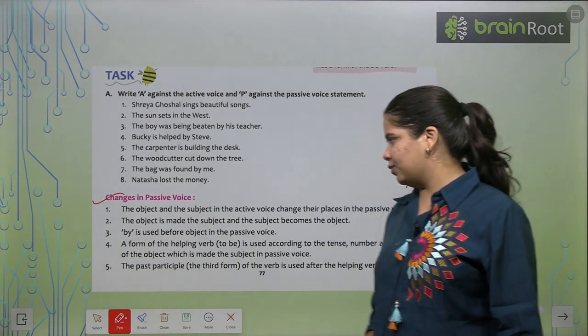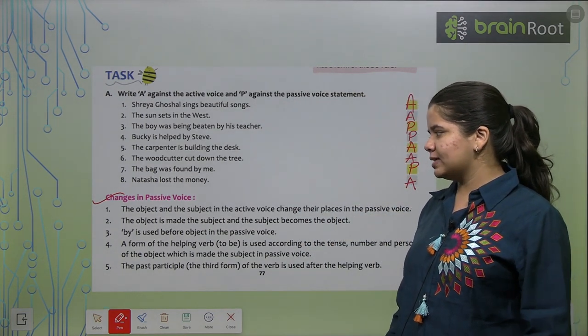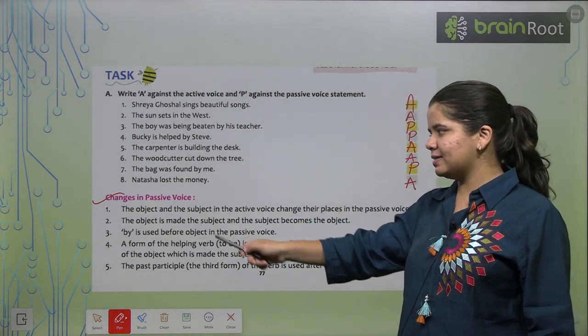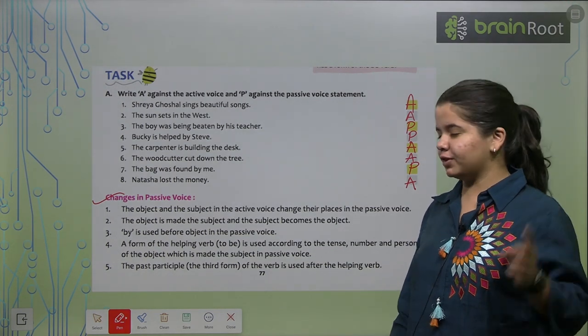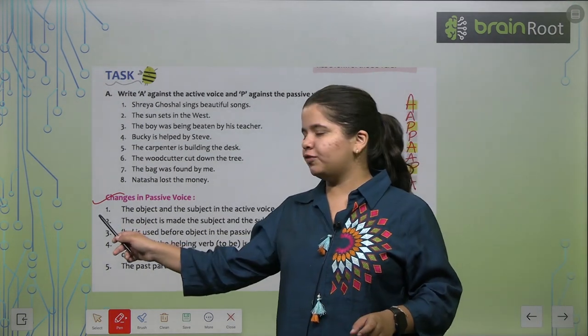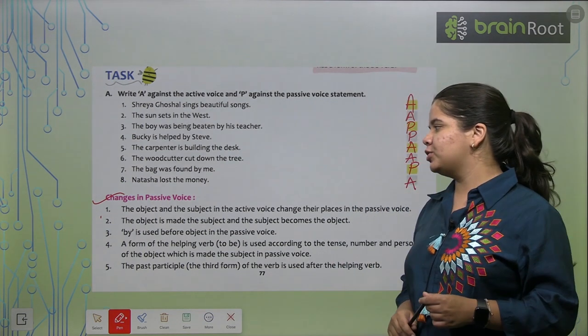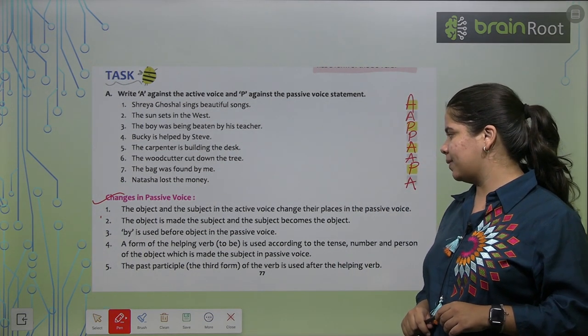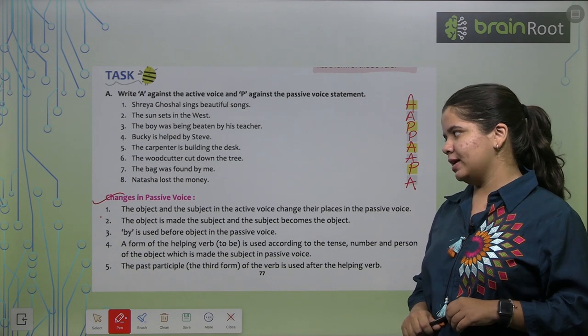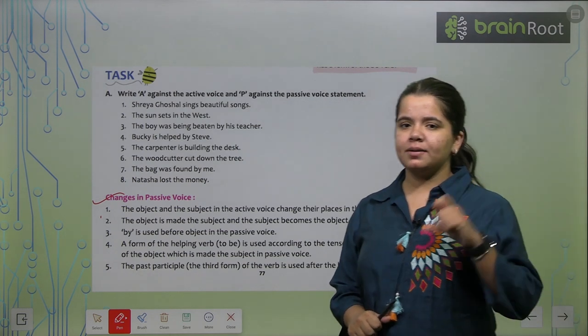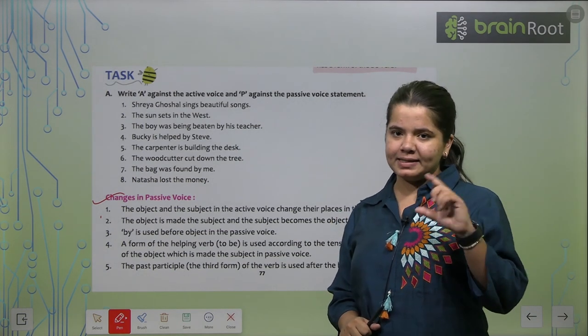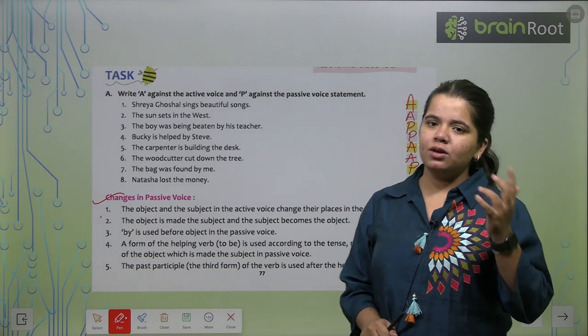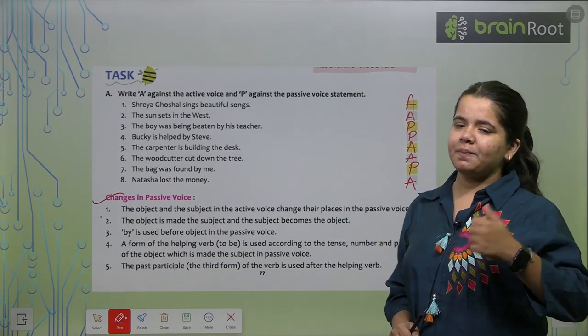Now, changes in passive voice. The subject, the object and the subject. Repeating the first point again. The first point, let's see. The object and the subject in the active voice change their places in the passive voice. So the places that object and subject had in active voice will be opposite in passive voice.